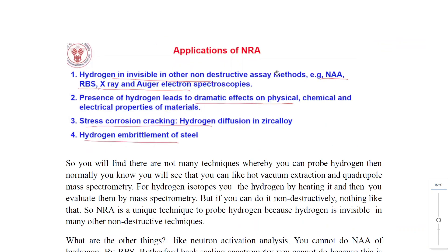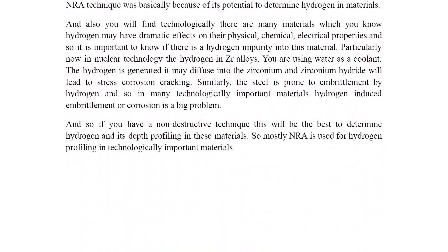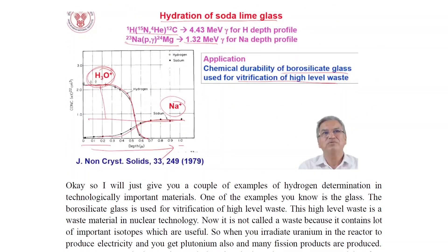The applications of NRA include: hydrogen invisible in other non-destructive assay methods such as NAA, RBS, X-ray, and Auger electron spectroscopy. The presence of hydrogen leads to dramatic effects on physical, chemical, and electrical properties of materials — including stress corrosion cracking, hydrogen diffusion in alloys, and hydrogen embrittlement of steel.